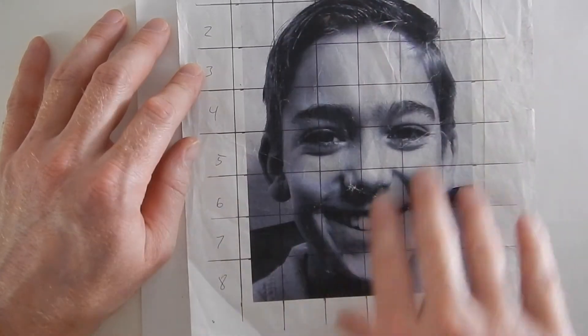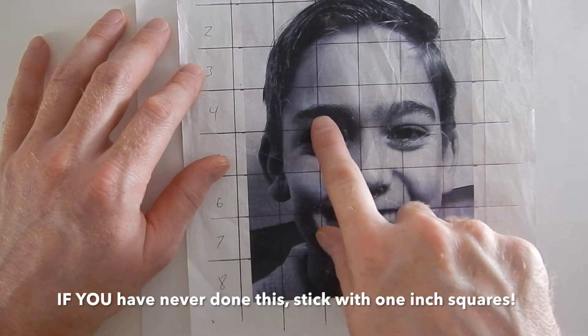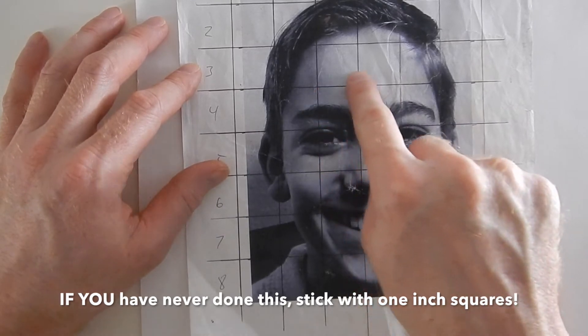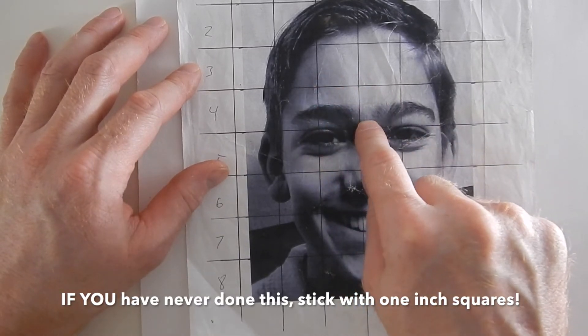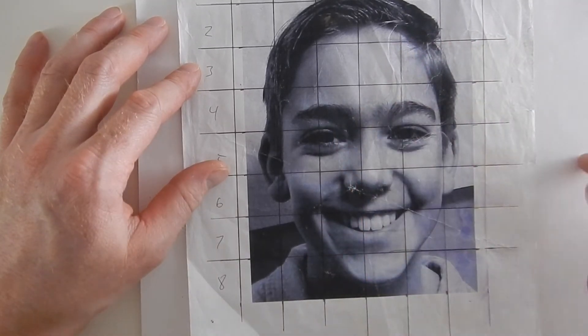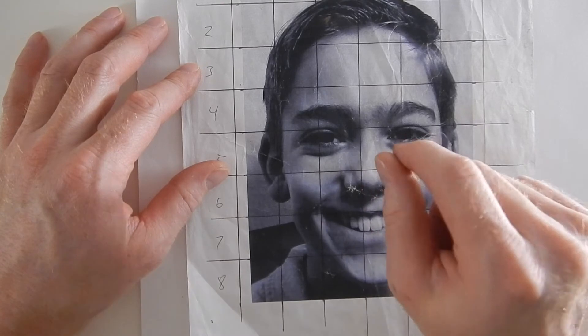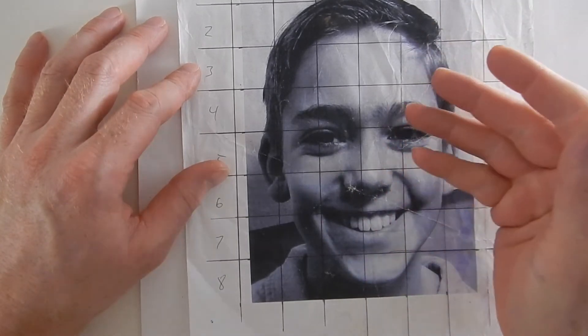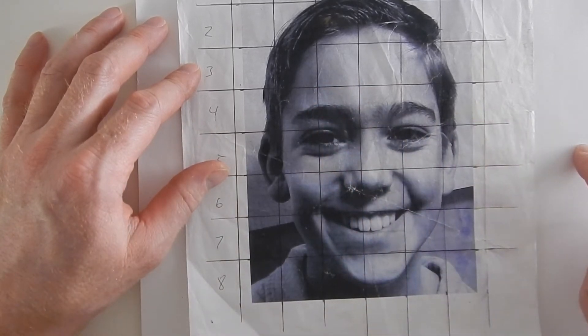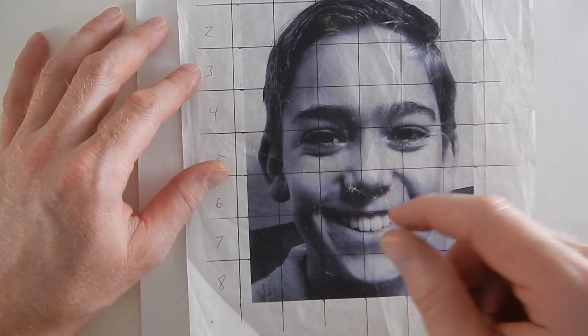Either you have your grid on the computer or you have your grid here. At this point, you need to make a decision. You need to say how large are these squares going to be on my actual artwork. On this, I have it as a one inch by one inch grid. If I wanted to make this person's face larger, I would want to, on my sheet of paper, make a larger than one inch by one inch grid. I can blow things up or shrink things down by doing it this way.